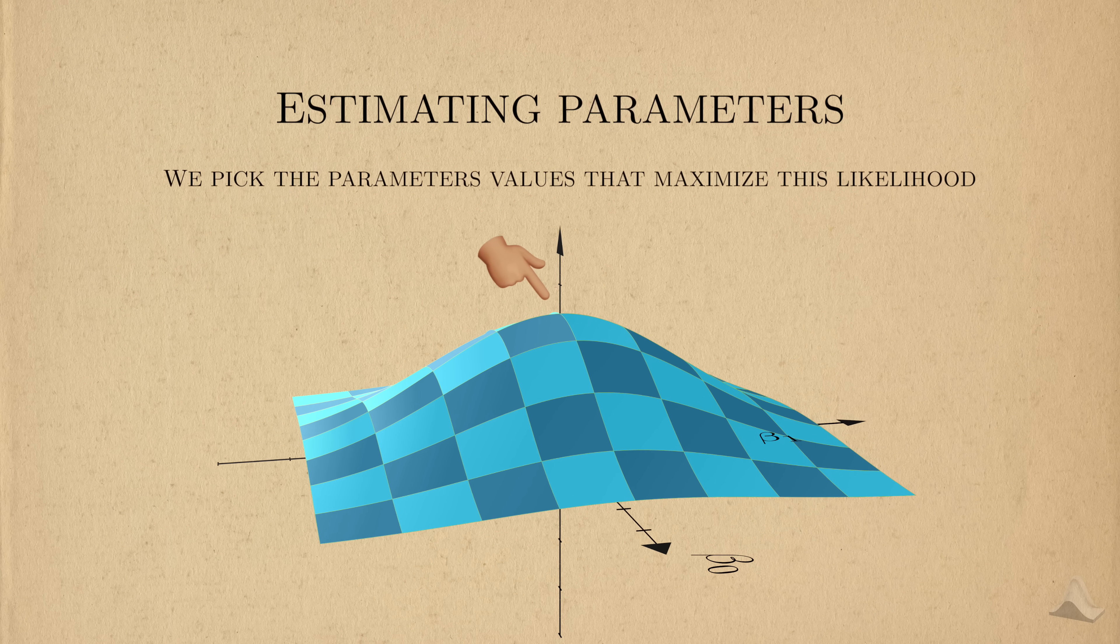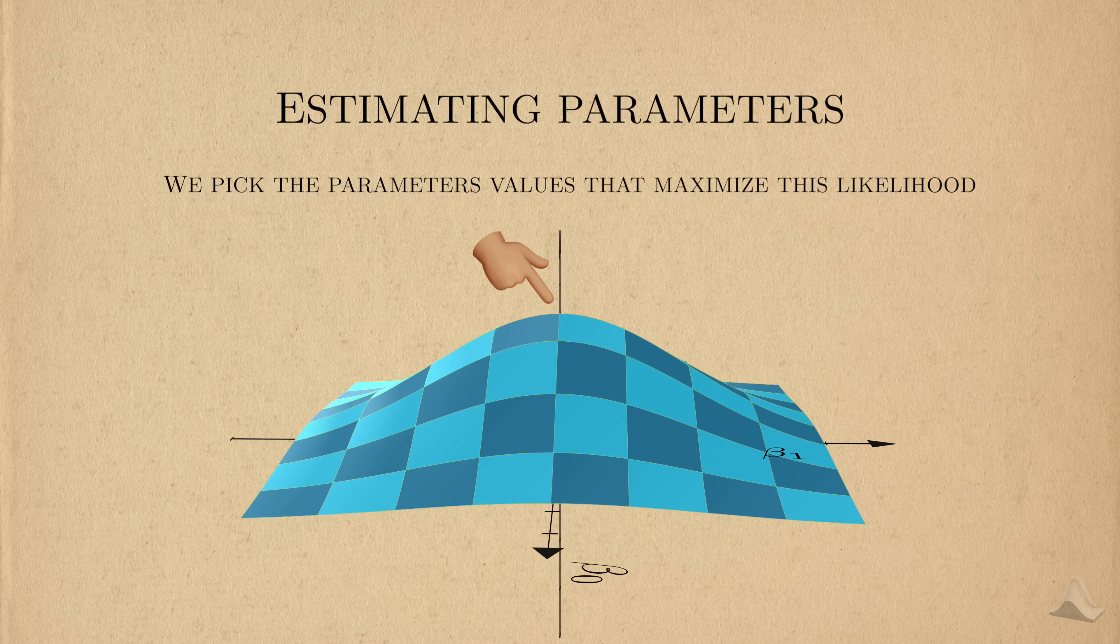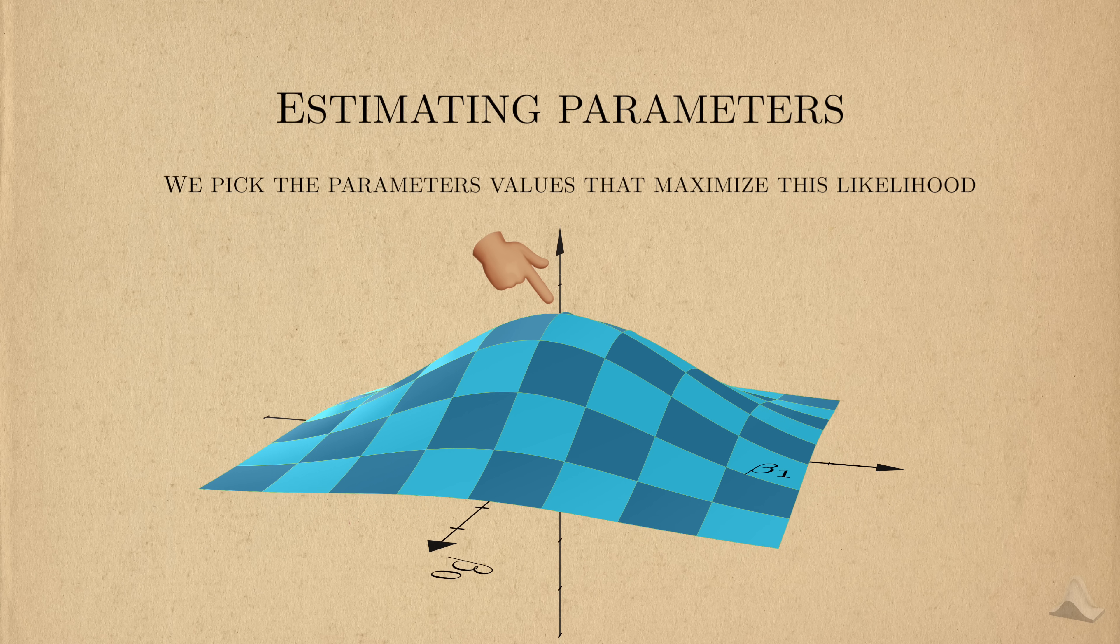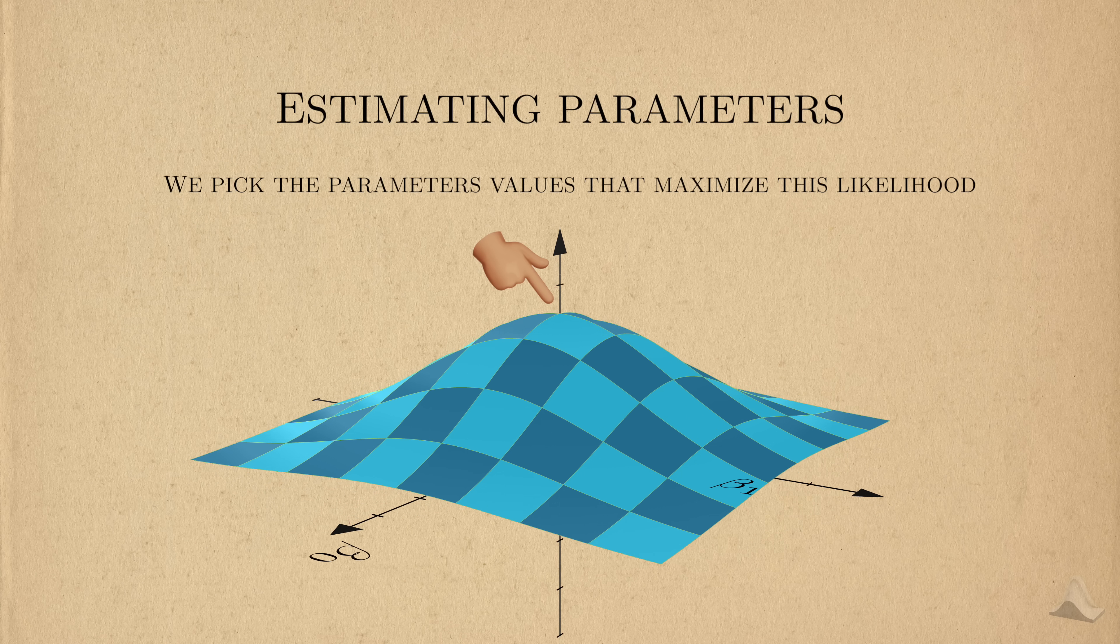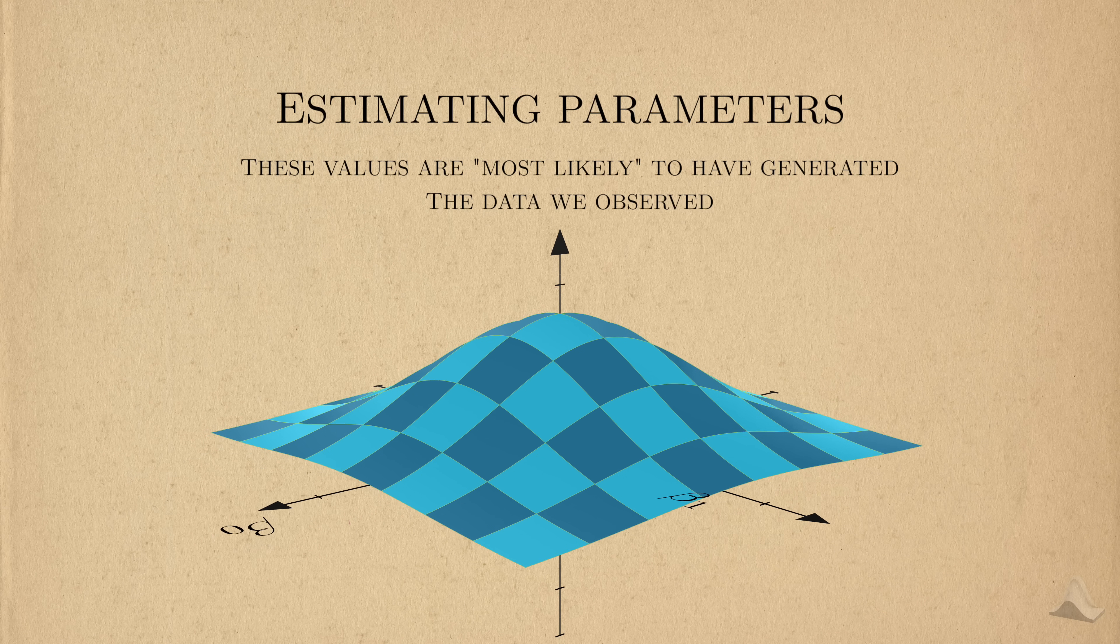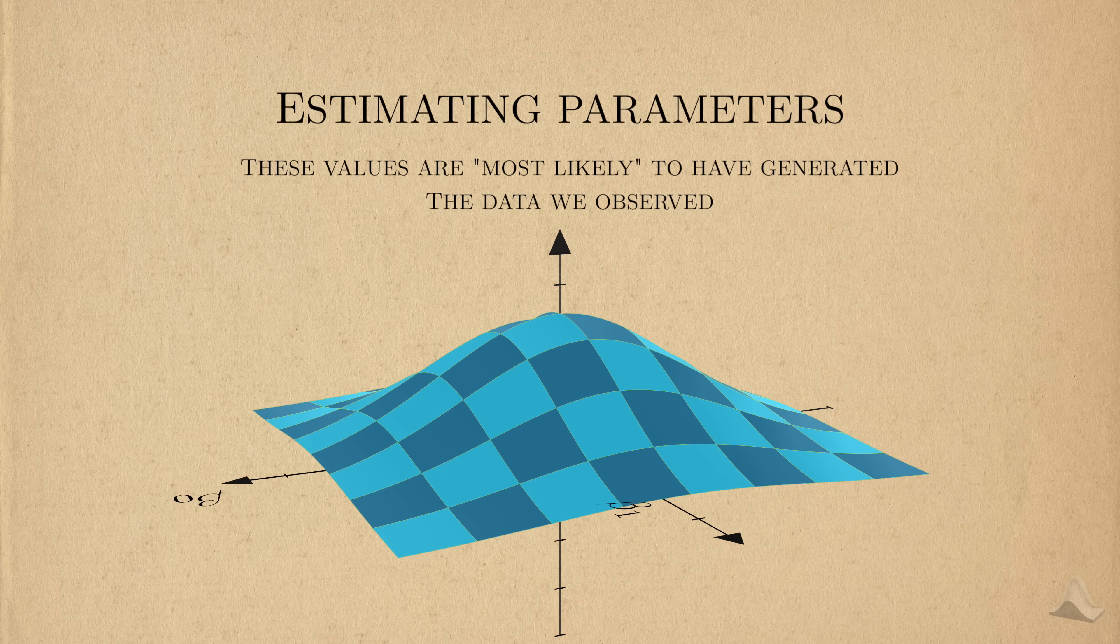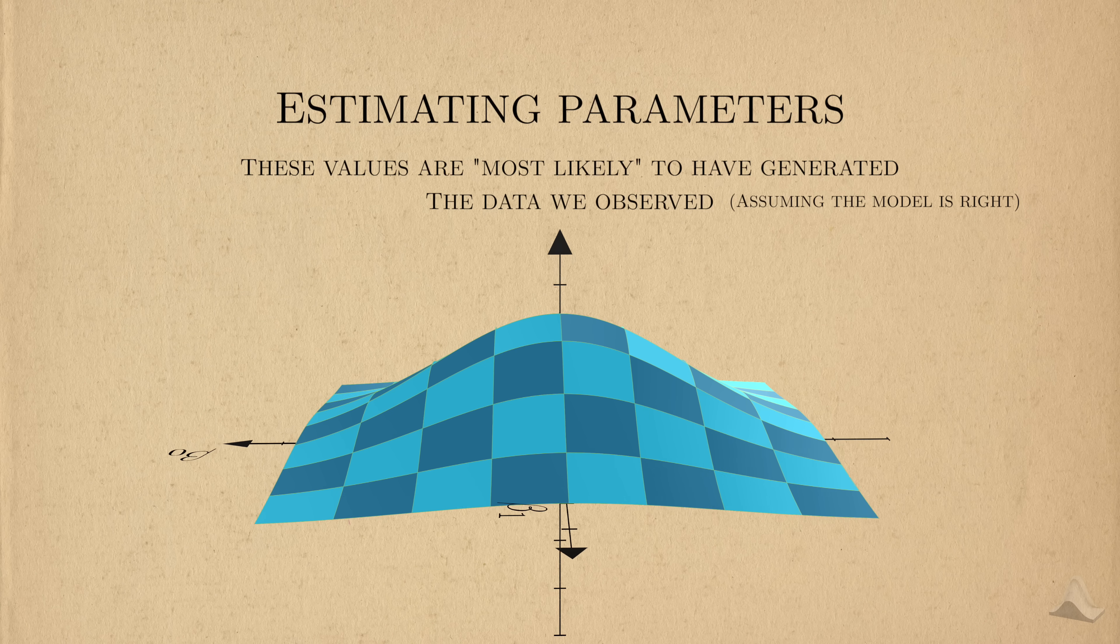Like its name suggests, the idea behind maximum likelihood estimation is to choose the parameters that maximize this likelihood. The idea is, whichever values we picked are most likely to have produced the data we observed, assuming our model was correct.